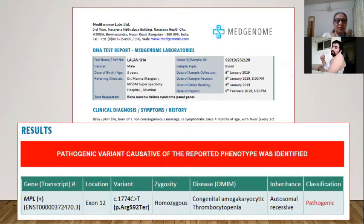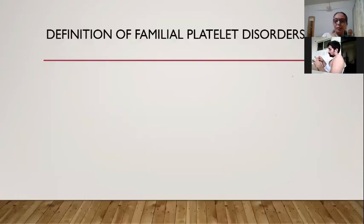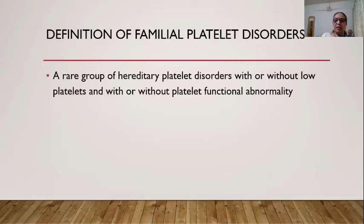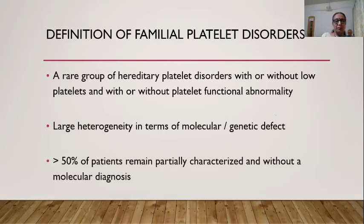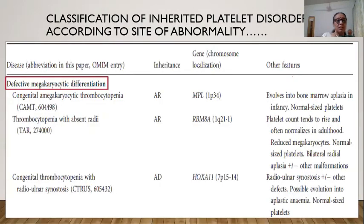This case demonstrates that aplastic anemia can be a platelet disorder in disguise. Familial platelet disorders, once thought uncommon, are being diagnosed more frequently now that clinical exome sequencing is available. There is large heterogeneity in molecular genetic defects; more than 50% of patients remain without a molecular diagnosis, but we must try. CAMT involves defective megakaryocytic differentiation due to MPL gene defect — autosomal recessive, evolving to bone marrow failure in infancy.